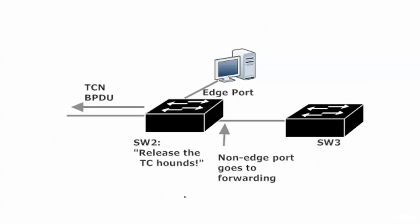When a non-edge port goes to forwarding, switch two sends out a TCN BPDU and lets the downstream switch know about it. The downstream switch gets it and says there's a change in the network, and it passes the TCN BPDU along — it's a ripple effect, like throwing a rock into water, rippling out to the rest of the network. But with RSTP, that only happens when a non-edge port goes to forwarding. When an edge port goes to forwarding, RSTP just couldn't care less — it's not going to bother notifying the rest of the network. That's a lot of theory; we have a little bit more to go over next, and then we'll do a live demo and move on from there.